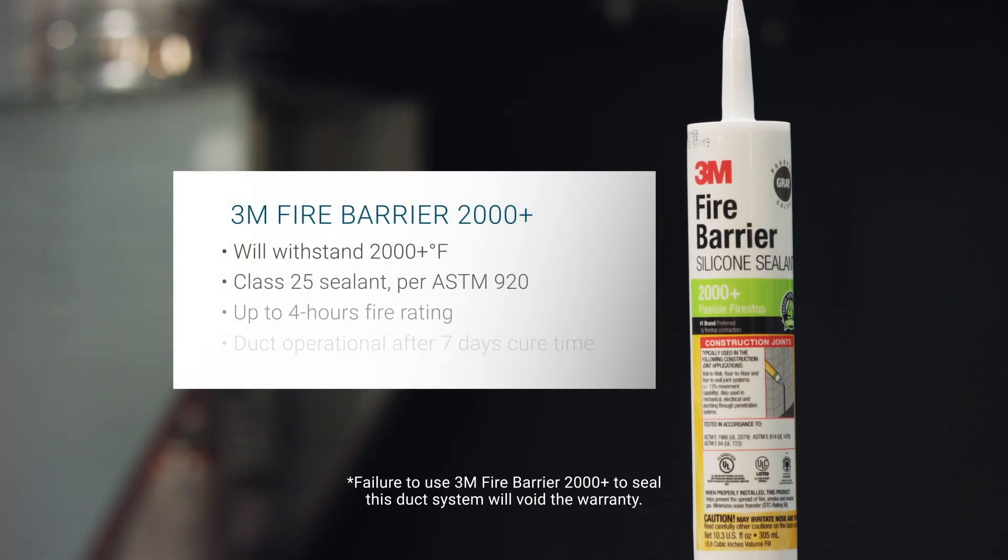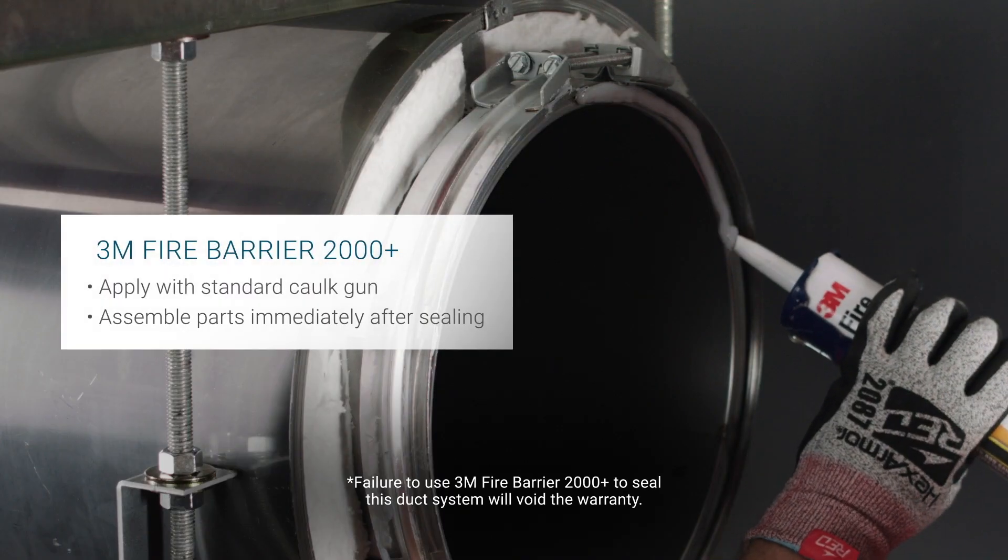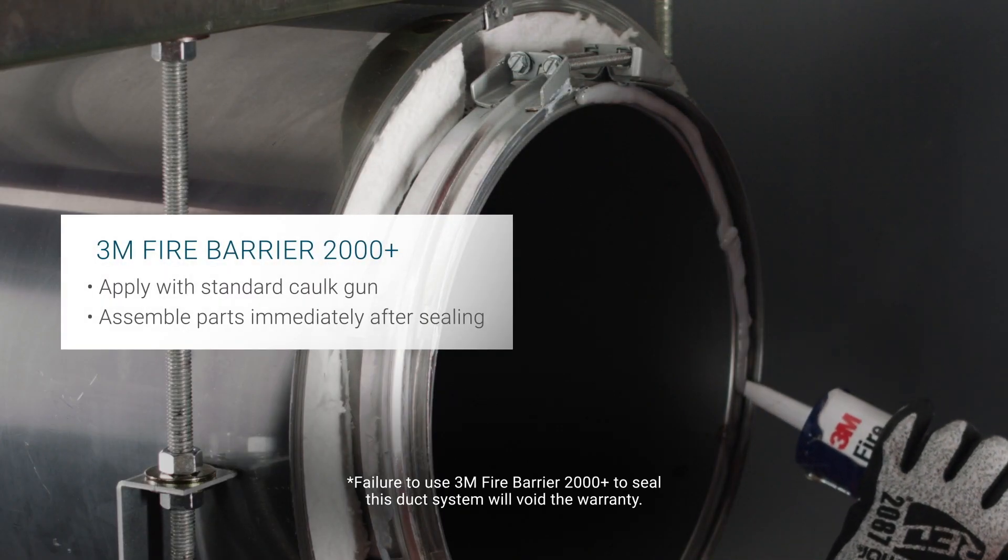Per the listing, 3M Fire Barrier 2000 Plus is the only sealant that may be used to seal this duct system. Sections must be clean, dry and frost free before sealing.